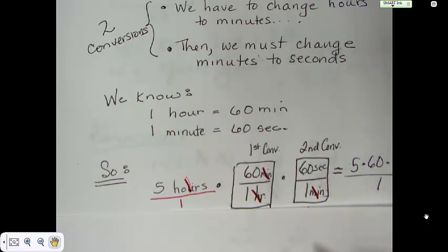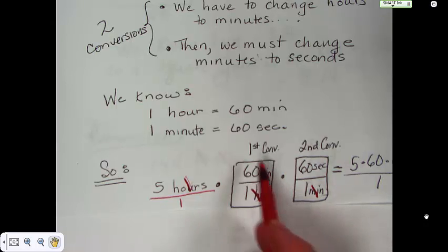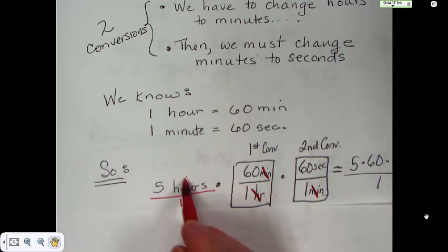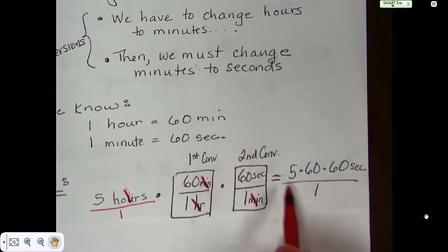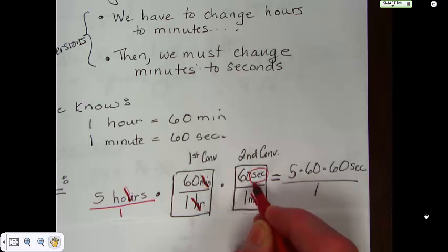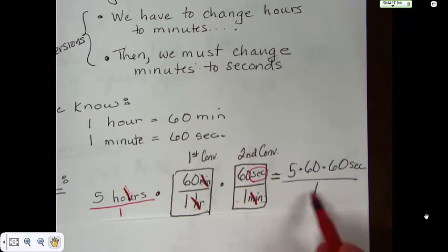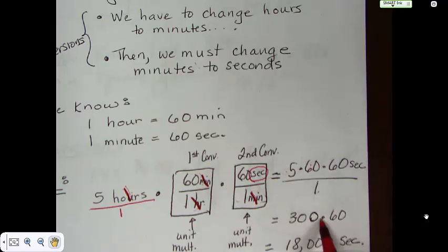We've done that before when we divided out variables. So we have five hours, 60 minutes is one hour, and then we want to get the seconds, so we put the minutes down here, and one minute is 60 seconds. We take hours and hours and minutes and minutes out, and we're left with five times 60 times 60, and the only measurement we have is seconds — no hours, no minutes left. We have one times one on the bottom, so we end up with 1,800 seconds.